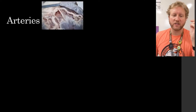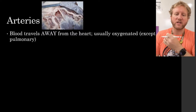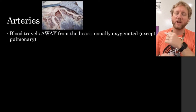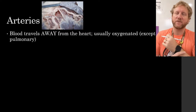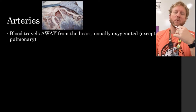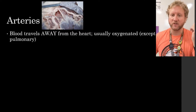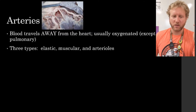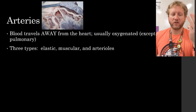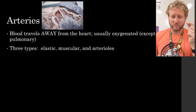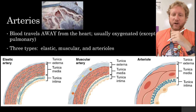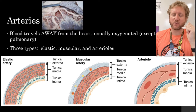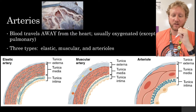Looking at arteries: blood travels away from the heart. It's usually oxygenated, except in the pulmonary circuit where deoxygenated blood is going to the lungs. There are three types of arteries: elastic arteries, muscular arteries, and arterioles. Here's a diagram showing some of the structural differences between those three, and we're going to get into greater detail about each one.